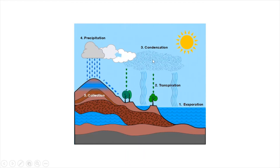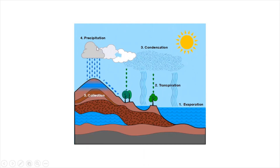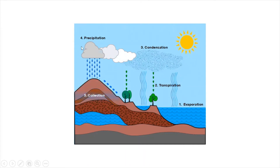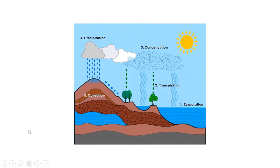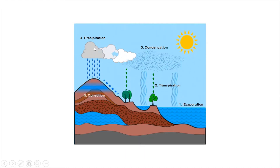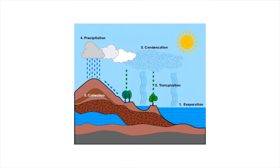The water droplets are forming into clouds due to the process called condensation. After condensation, precipitation takes place. When the clouds become heavy with the increase of water vapors, it rains. These clouds move towards the surface and rain falls on different parts of the earth. Sometimes, if the precipitation becomes more due to coolness —